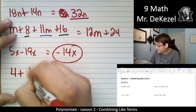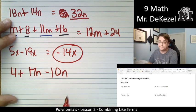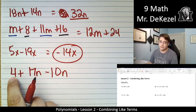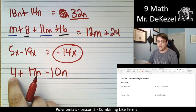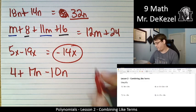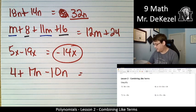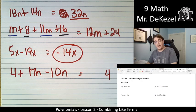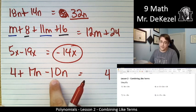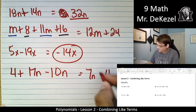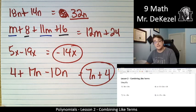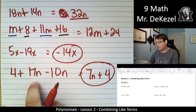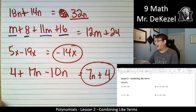4 plus 17n minus 10n. Nothing matches our 4. There's nothing else to the zeroth degree. So that's fine. I'm going to generally want to write them in standard form. So that's going to go last, though. So I've got 4 at the back. Now I've got 17n's and I take away 10n's. That would be 7n's left. That ends up being a linear binomial, not a linear trinomial. So anything with the same degree we add together.